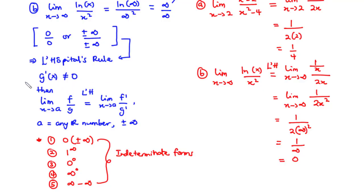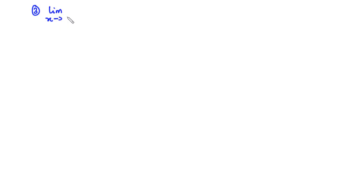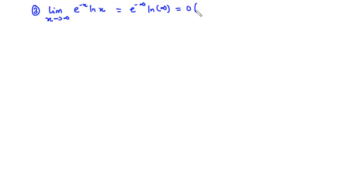Let's take up some examples. For example 3, we want to find the limit as x approaches infinity of e to the power negative x times ln x. First, let's try direct substitution. Inputting infinity, we have e to the power negative infinity times ln of infinity. Now e to the power negative infinity is 0, and ln of infinity is infinity. Since we don't exactly know what 0 times infinity is, we say this is called an indeterminate product.